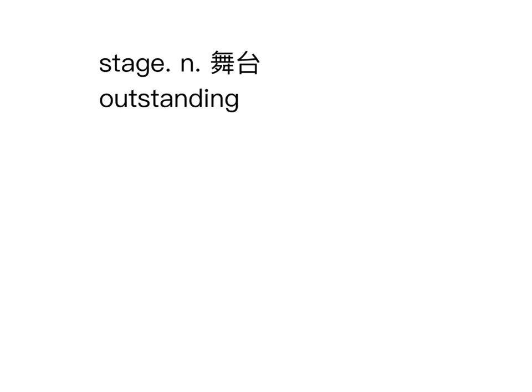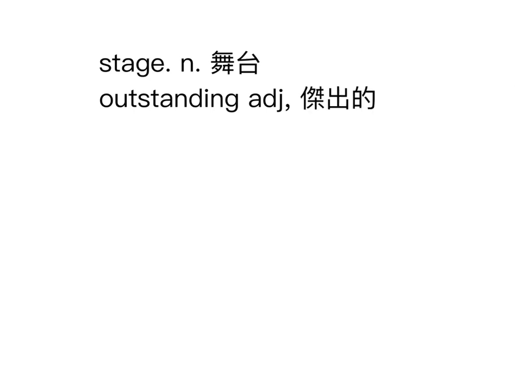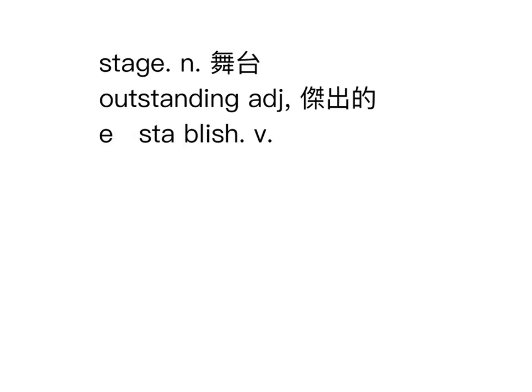stage这个字当名词不就是舞台吗，就是你站在那边。outstanding这个形容词是杰出的，out是出去，大家都站在这边，你能够站得出去就是特别的杰出。establish这个字，e是out，sta是站立，站出去了，就是有人站出去了要赶快盖房子，所以establish叫做建立。